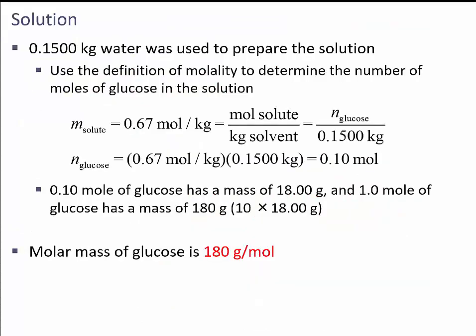Now we use 0.15 kg of water that was used to prepare the solution. Using the definition of molality — moles of solute per kilogram of solvent — we get: moles = 0.67 mol/kg × 0.15 kg = 0.1 moles. So 0.1 moles of glucose has a mass of 18 grams, meaning one mole has a mass of 180 grams per mole. The molar mass of glucose is 180 g/mol.